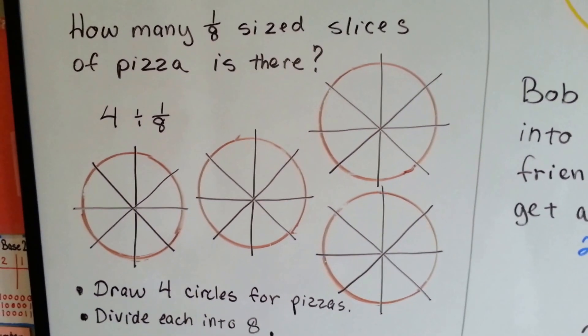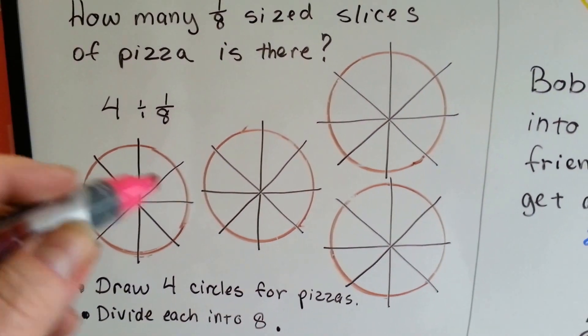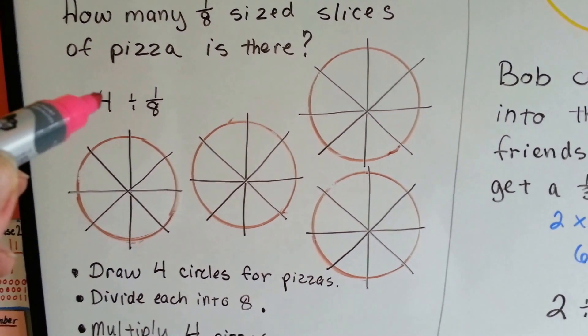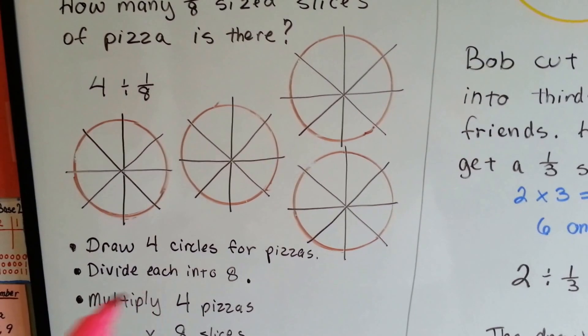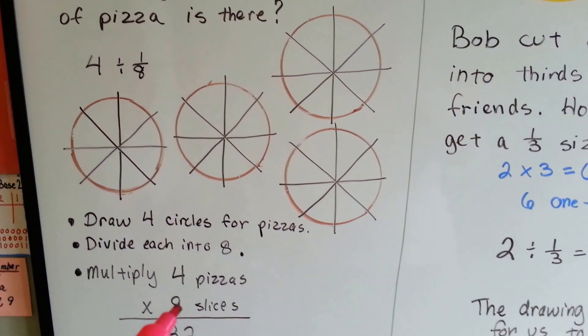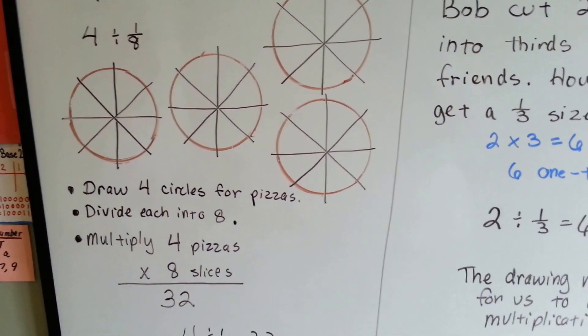So here's our four pizzas. They're cut into slices of eight. So we have four divided by one eighth. We draw the four circles. We divide them into eight. We multiply four times the eight slices and we get 32.